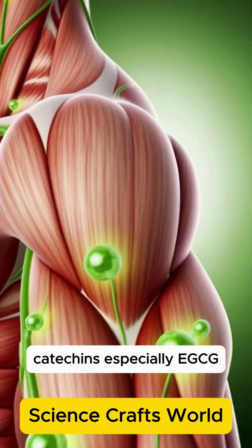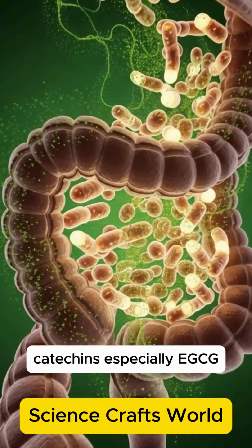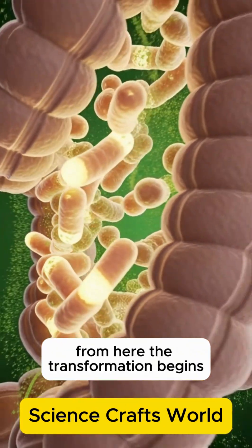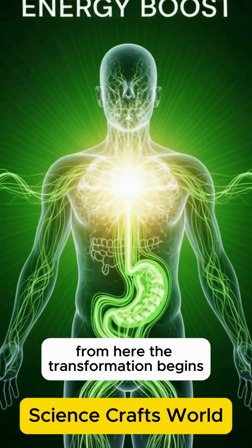Inside the intestines, catechins, especially EGCG, are absorbed into the bloodstream. From here, the transformation begins.